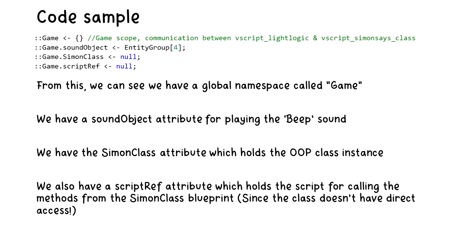Here is an example from the VScript. We have a global table called 'game', which is uninitialized at runtime. Then we create a new attribute called sound_object, which will now be referenced under entity group 4 — that is the fifth element within the logic script. Then we have two other attributes called sound_class and script_reference, which are assigned null for now.